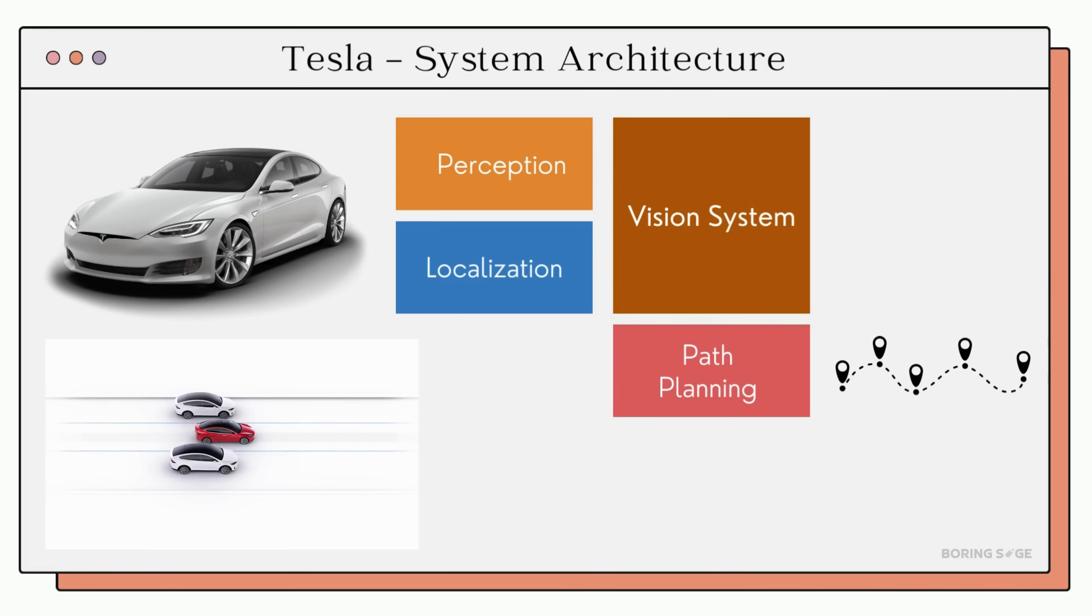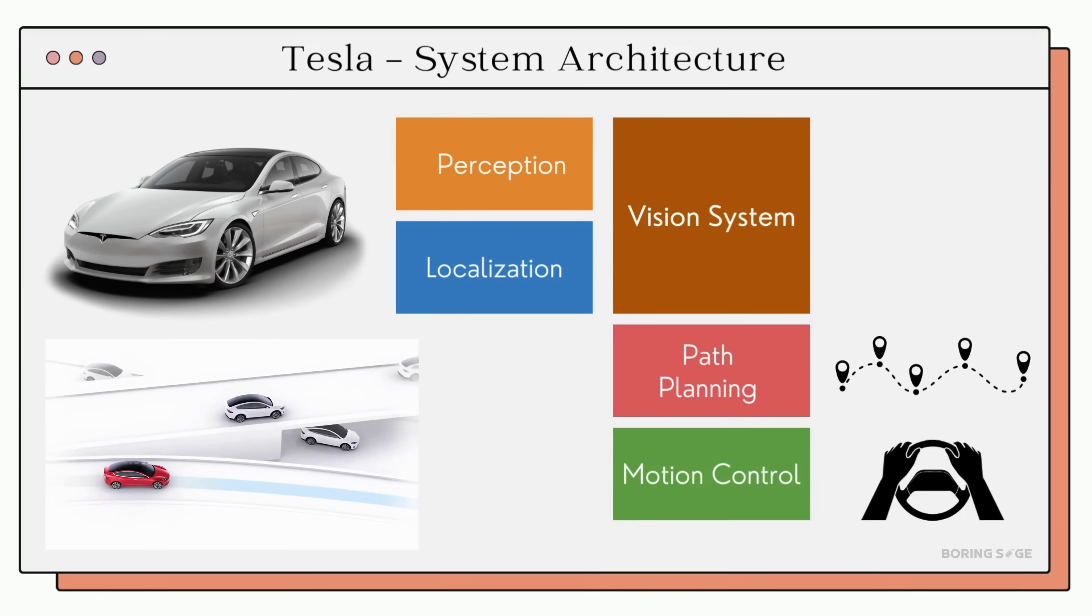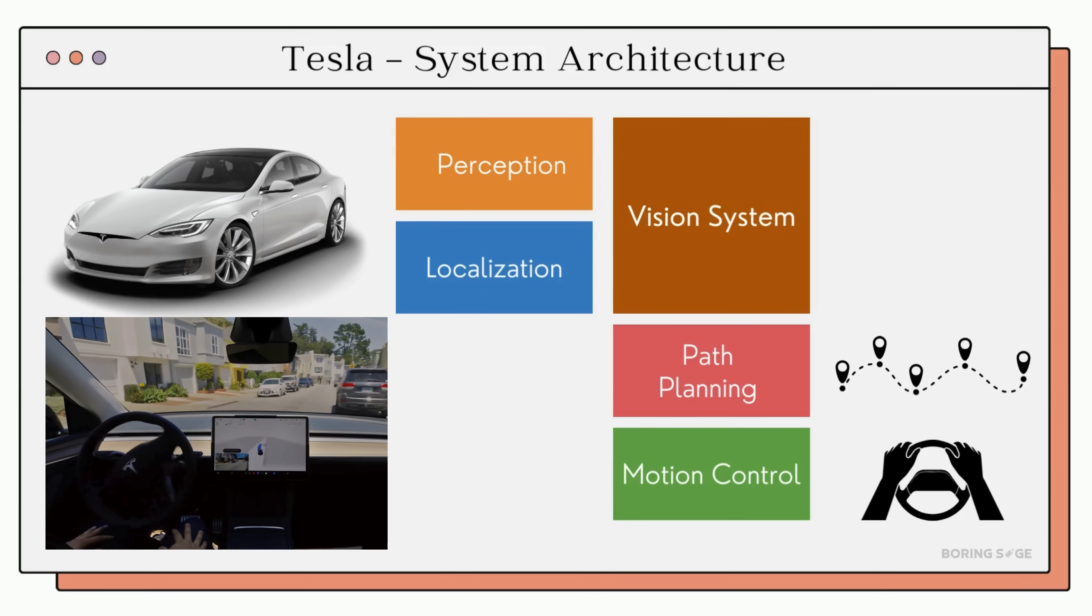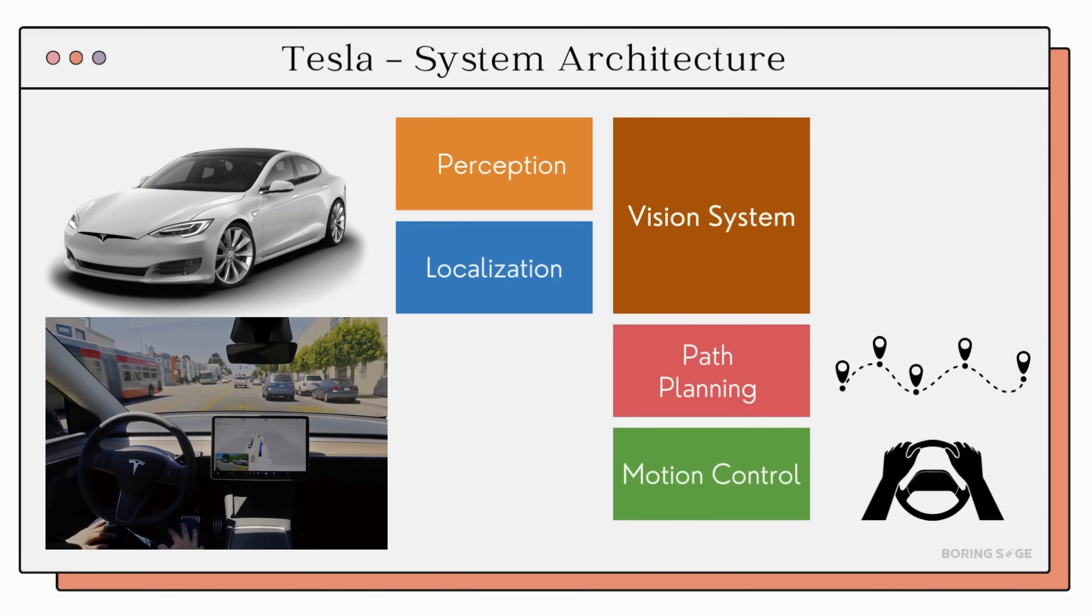The vision system feeds data into the path planning module which allows it to identify the optimal trajectory to reach the destination. This data is then fed to the motion control module. This executes the trajectory using steering, accelerator and brakes.